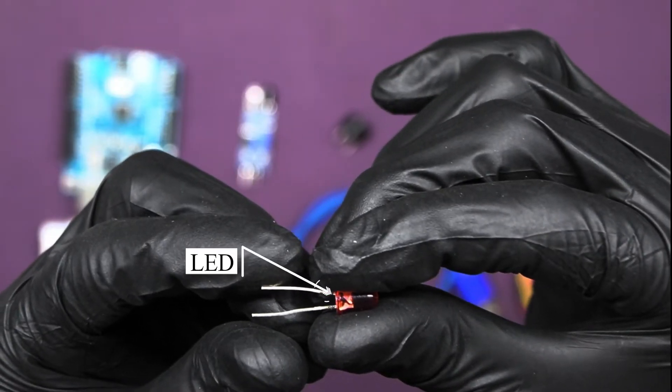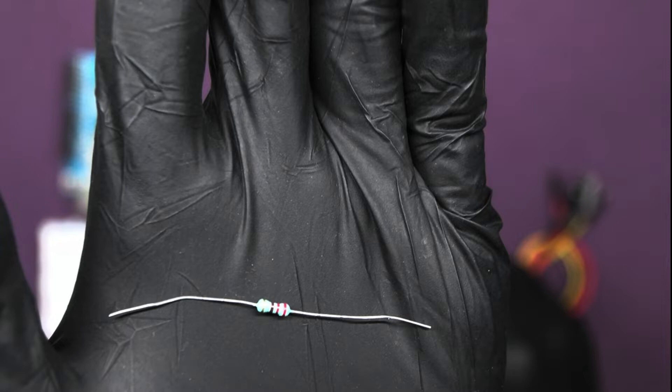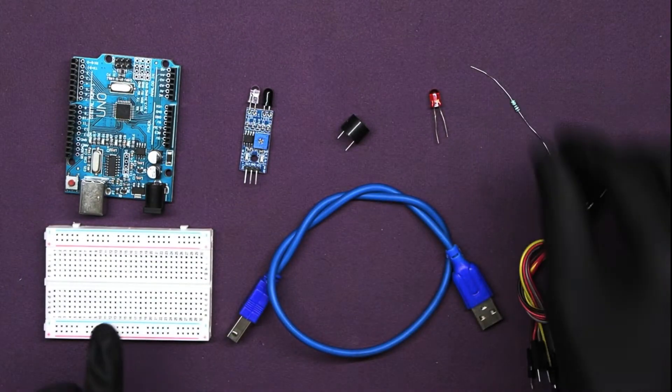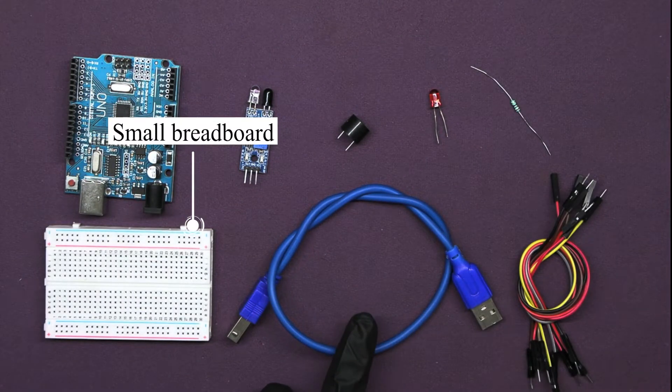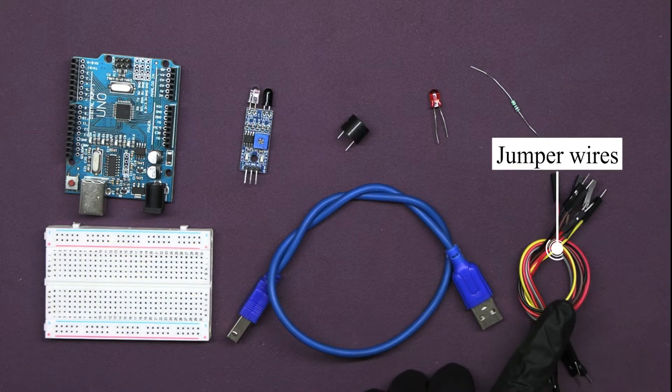One LED. One resistor. For building a temporary circuit, we need one breadboard. USB cable to upload code to Arduino. And some jumper wires.